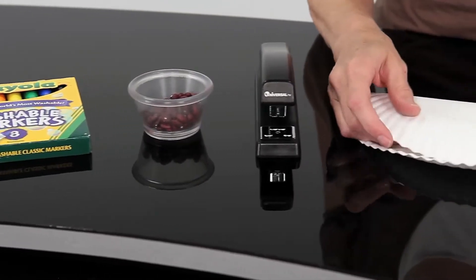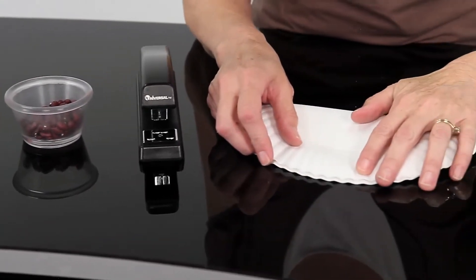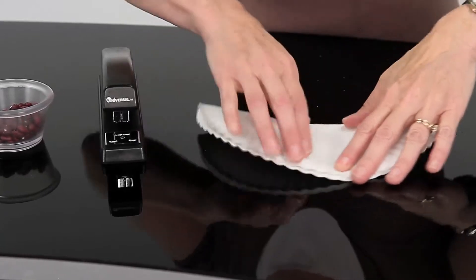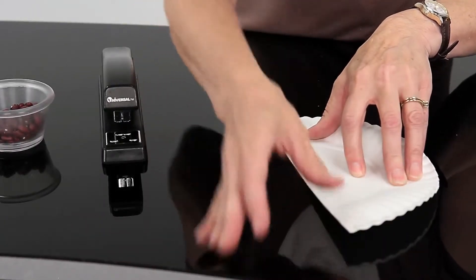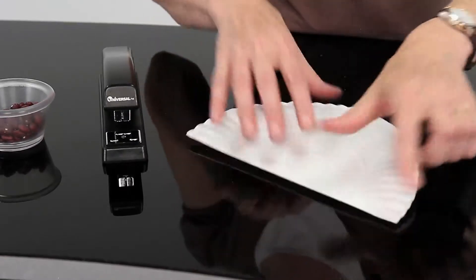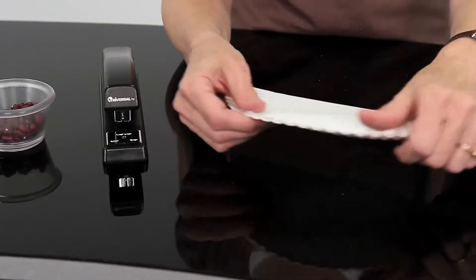First, you fold the paper plate in half. It doesn't matter if it squashes. You will want to make a good seam right there. It's a little bit easier to staple that way.